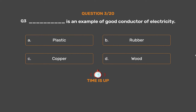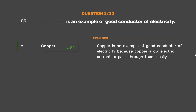The correct answer is Option C: Copper. Copper is an example of a good conductor of electricity because copper allows electric current to pass through it easily.